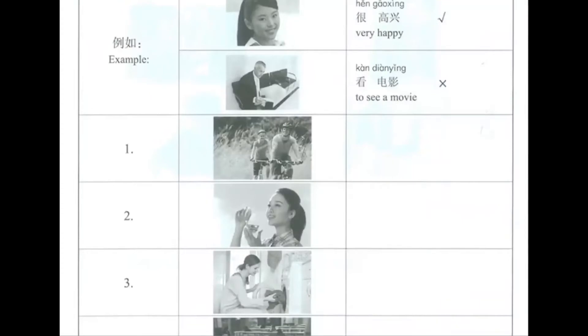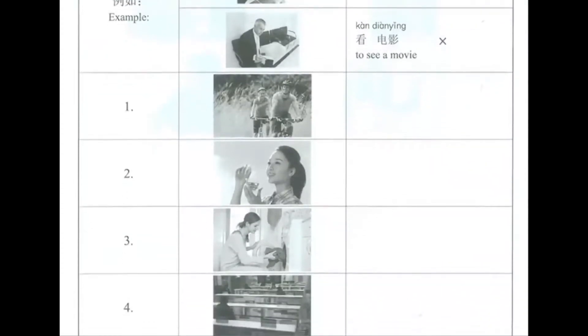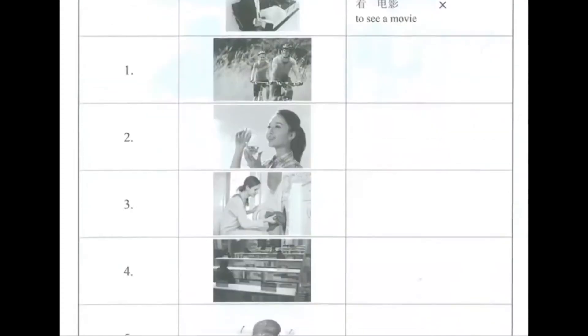We're going to see the first one here. 开车. Two people on a bike, we hear 开车, which means to drive a car, so this one is incorrect.